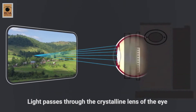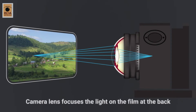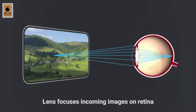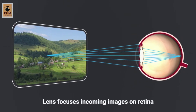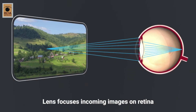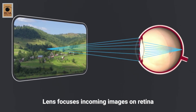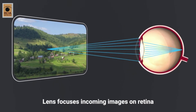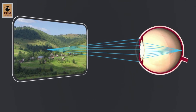In a camera, the lens focuses the light from incoming images onto the film present at the inner back of the camera. In a similar way, the lens in the eyes focuses the incoming images from the outside world to a light-sensitive area called the retina, which covers the inside back of the eye.